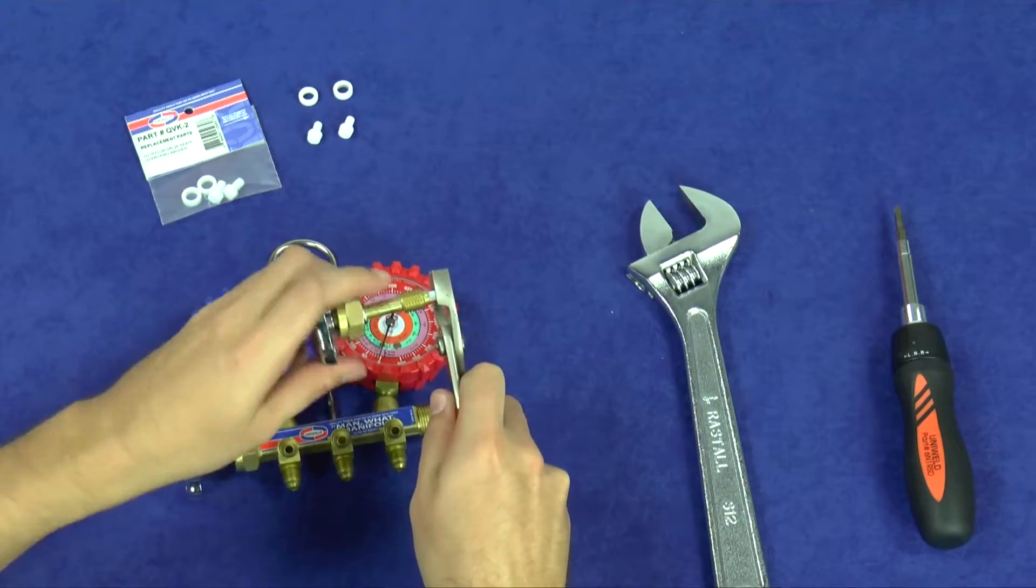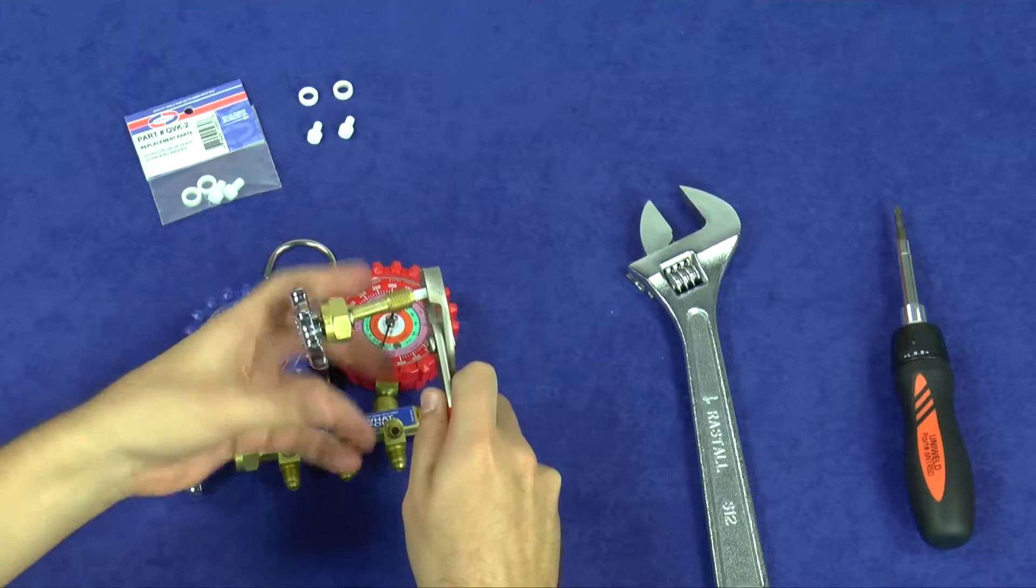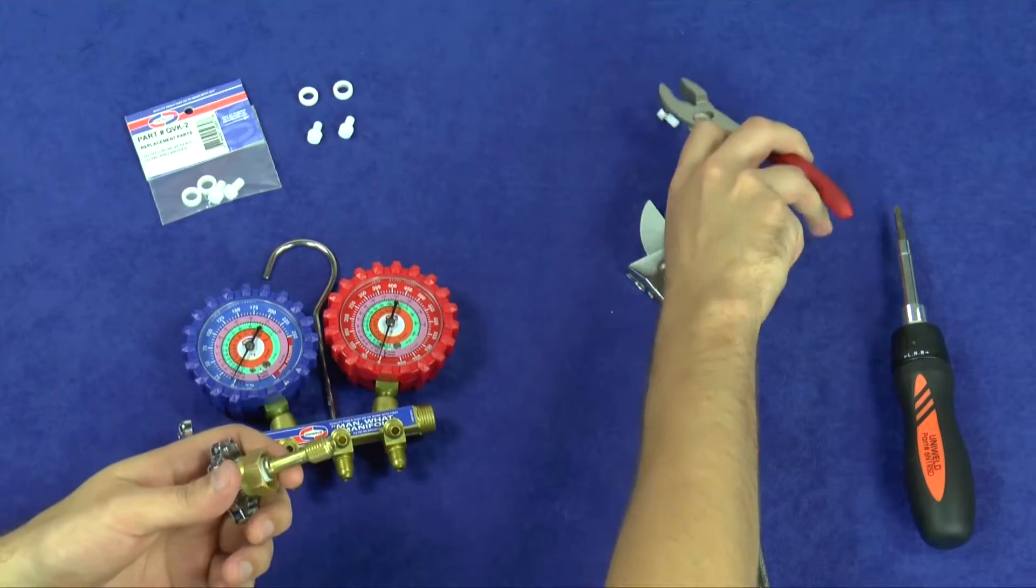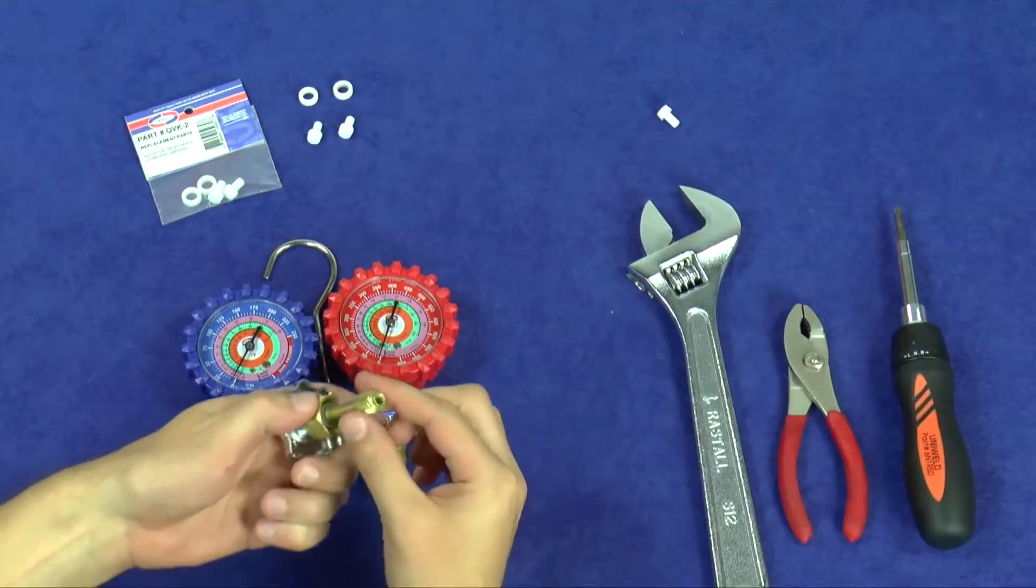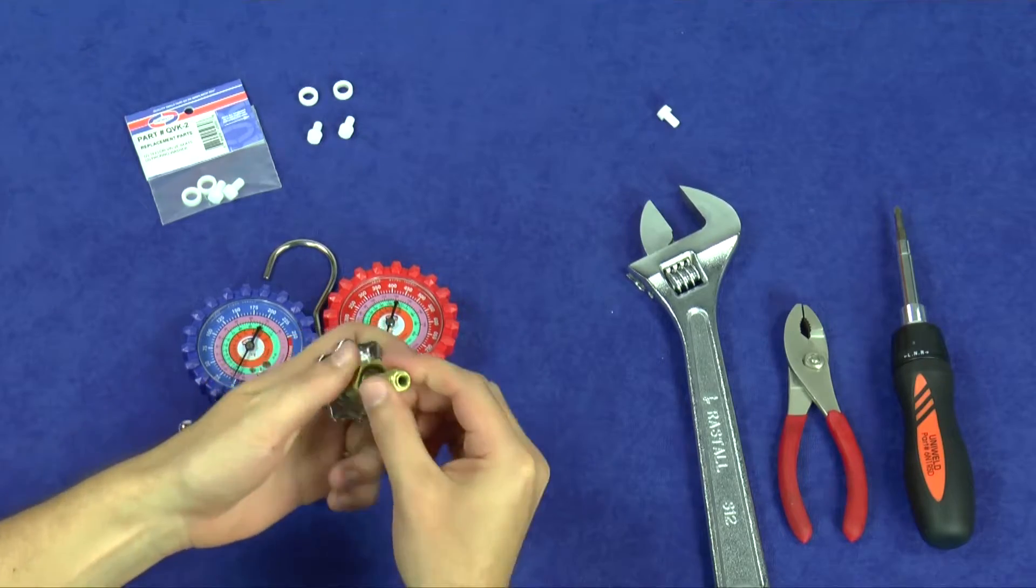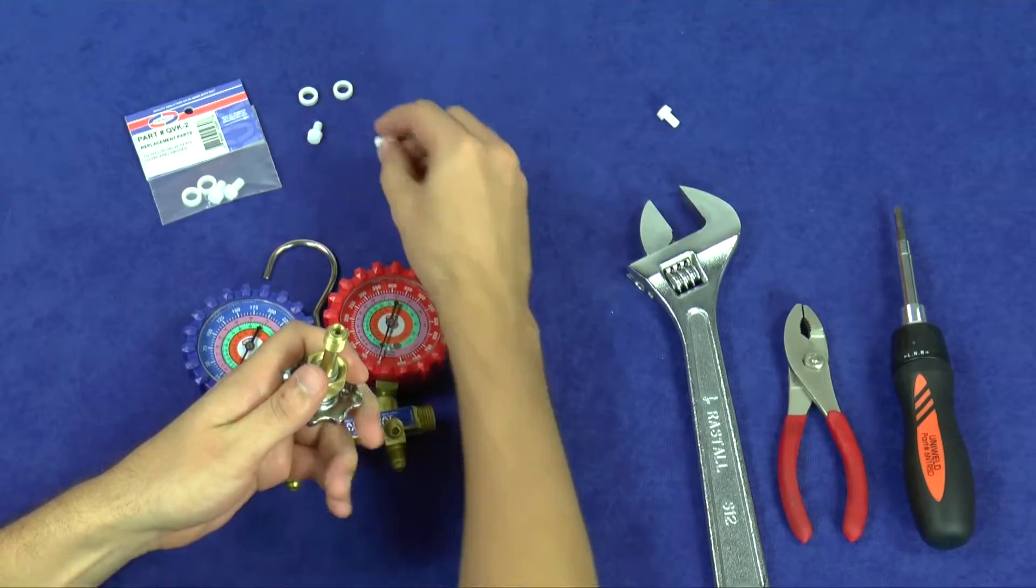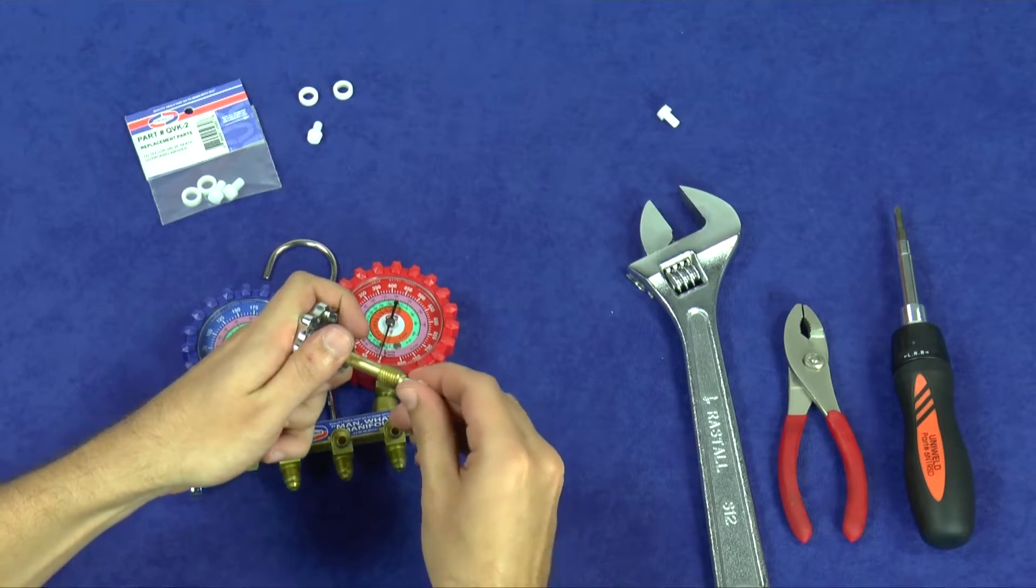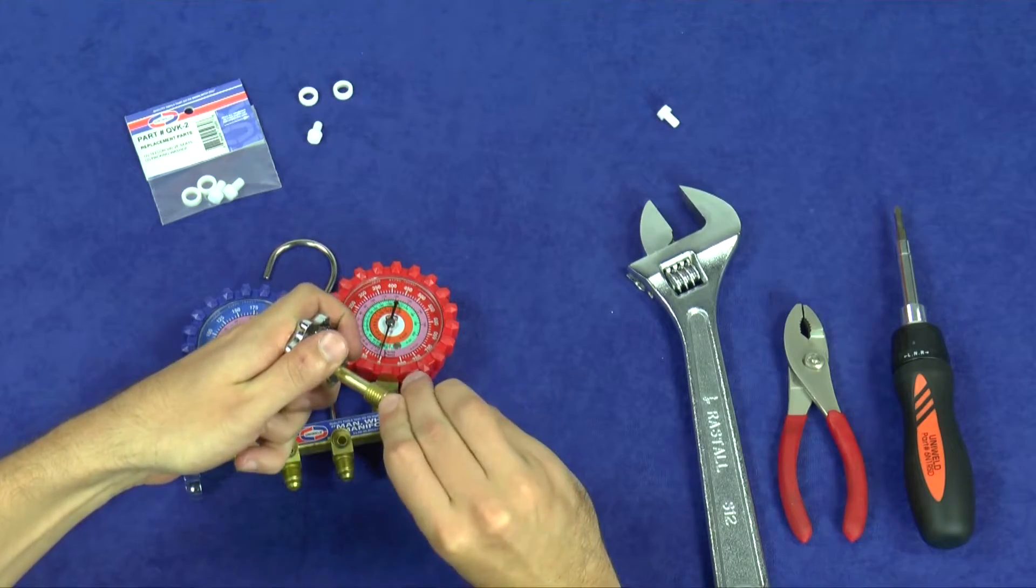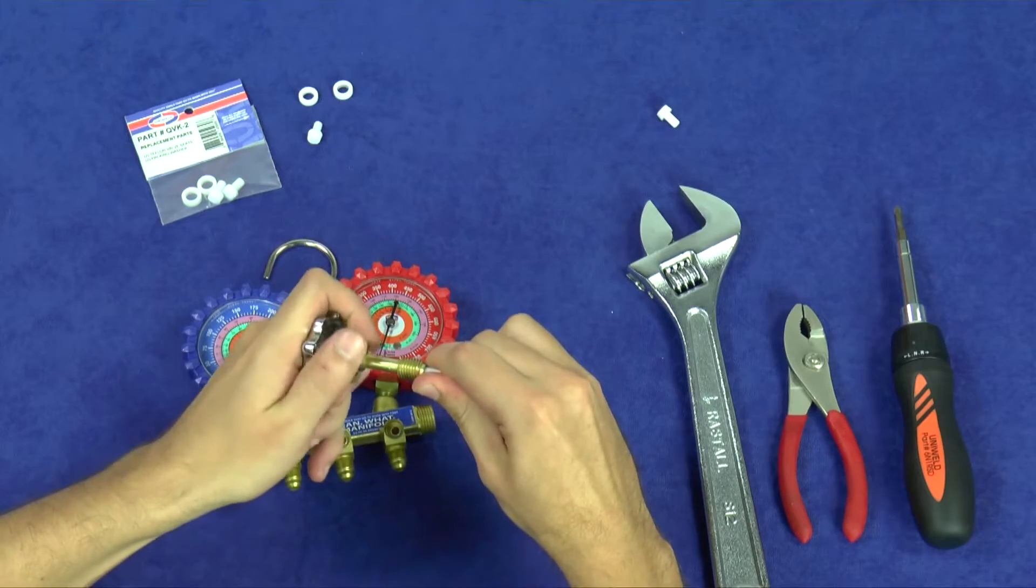Using pliers, unscrew the Teflon seat from the valve stem. The threads inside the valve stem are reversed, so removing the Teflon is clockwise and screwing it in is counterclockwise. The new Teflon seat does not have threads—it is self-tapping—so be sure to thread it straight into the end of the brass stem.